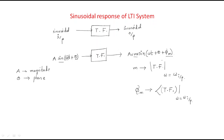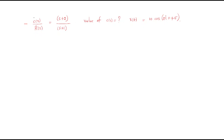To summarize: to find the magnitude of the output, we find the magnitude of the transfer function and substitute the input frequency. To find the phase of the output, we find the phase of the transfer function and substitute the input frequency. To understand this clearly, we will analyze one problem: C/R = (s+2)/(s+1), with input r(t) = 10·cos(2t + 45°).